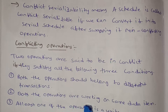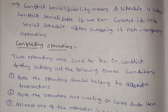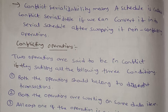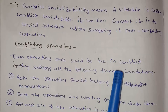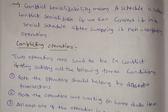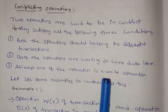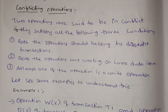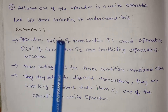Both operations are working on the same data item. For example: R(X), W(X) — these are operations on the same data item X. At least one of the operations must be a write operation. Let's look at some examples to understand this.